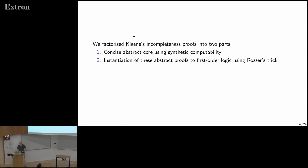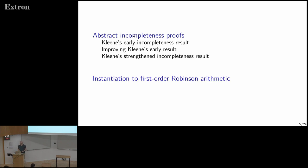We factorized both of Kleene's proofs into two parts: first, a very concise abstract core formalized using synthetic computability; and second, an instantiation of these abstract proofs to first-order arithmetic using Rosser's trick. We'll first consider the abstract incompleteness proofs, covering Kleene's early result, how to strengthen it, and how to obtain the strongest incompleteness result. Then we'll briefly discuss the instantiation.